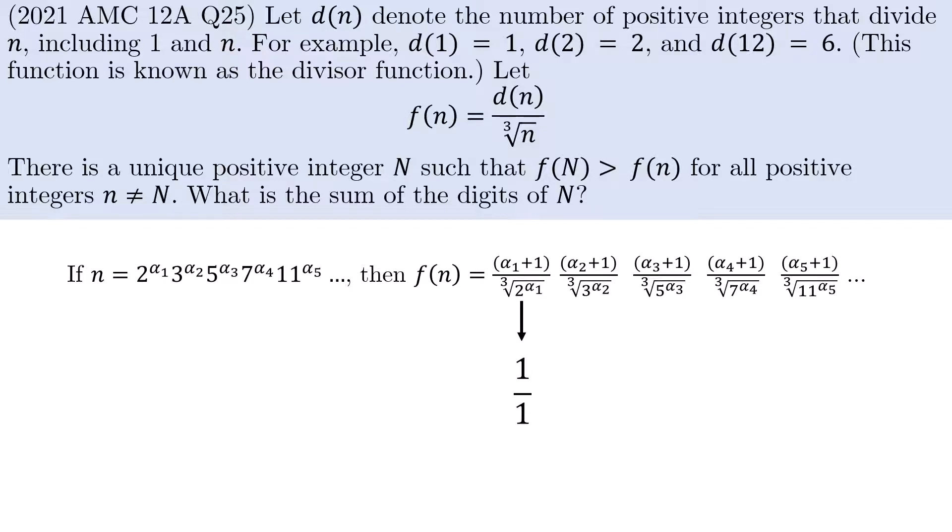So when we make the first increment, the numerator changes by a factor of 2, while the denominator changes by a factor of cube root of 2, which is an overall increase. So let's increase this alpha by 1 and see whether we should increase alpha further.